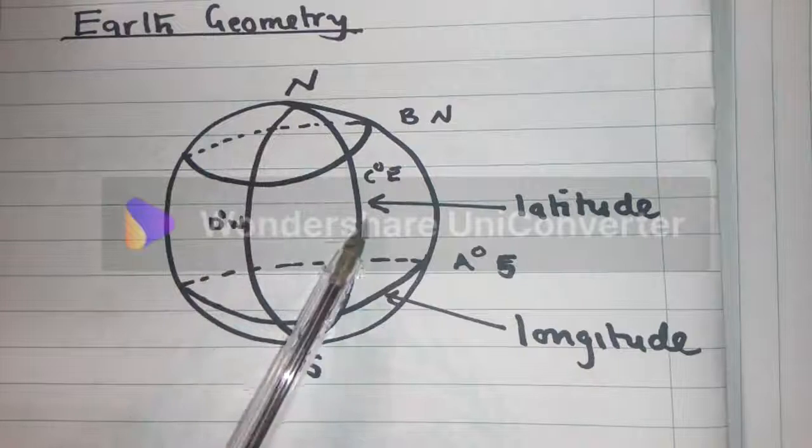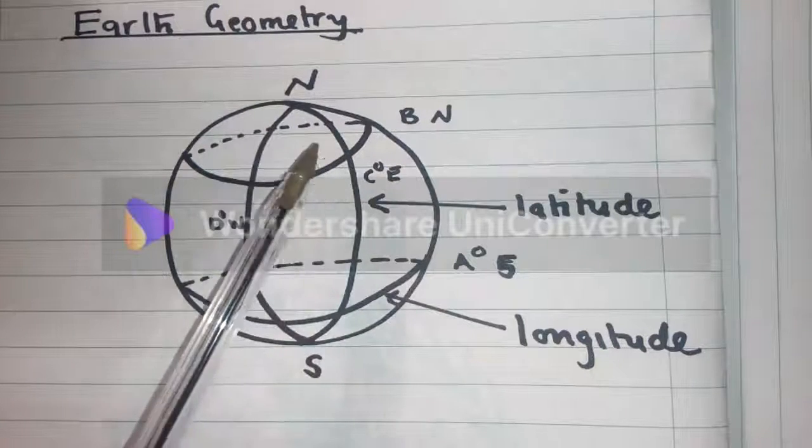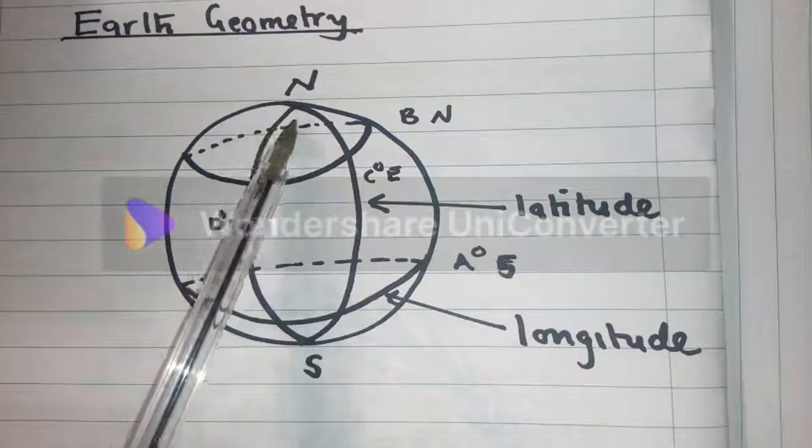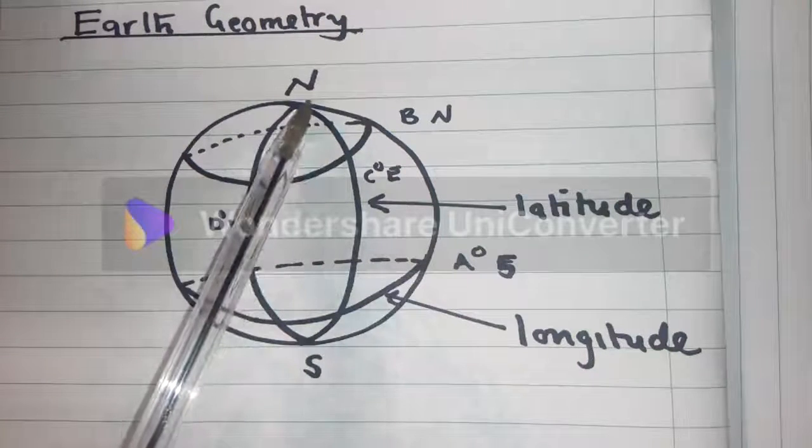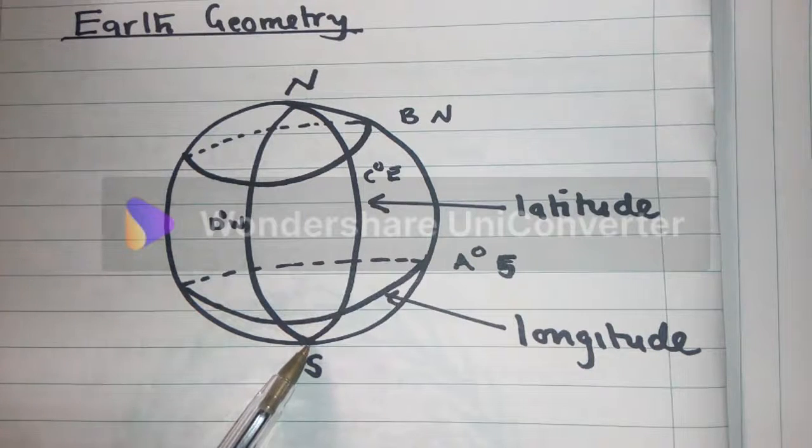And these lines, if you're able to see nicely, from North to South, they are called longitude. So these are longitude. They all touch somewhere there or here on top and down here where South is.